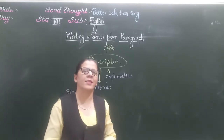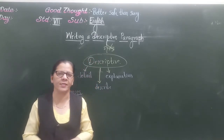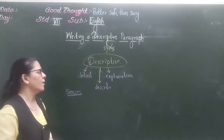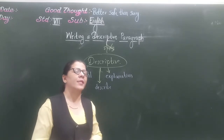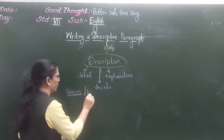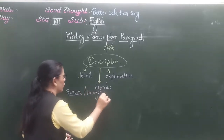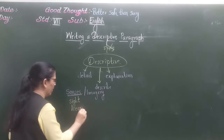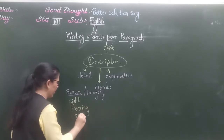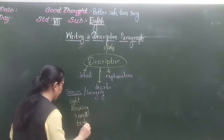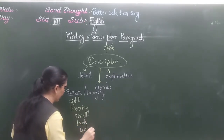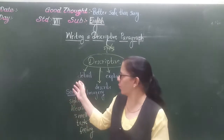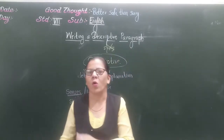We have already learnt what the sense organs are. We have five sense organs: eyes, ears, nose, tongue, and skin. So here, by using your senses — or you can say imagery — the senses are sight, hearing, smell, taste, and feeling. You have to describe the topic using any or all of these senses.